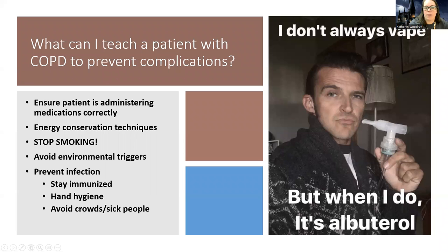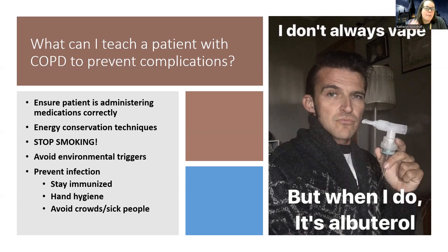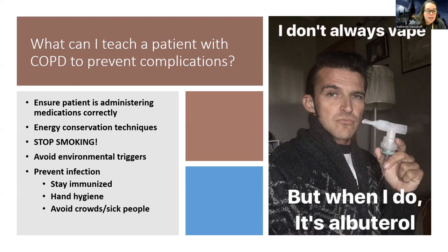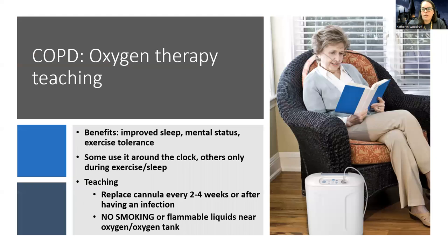To prevent complications, ensure patients are administering medications correctly and using energy conservation techniques — balancing rest and activity. Advise stopping smoking: even if they already have COPD, smoking causes much worse inflammation and faster progression. Avoid environmental triggers that might cause further lung inflammation. COPD patients are at very high risk for infections, so they need to stay up to date on immunizations, practice hand hygiene, and avoid sick people.